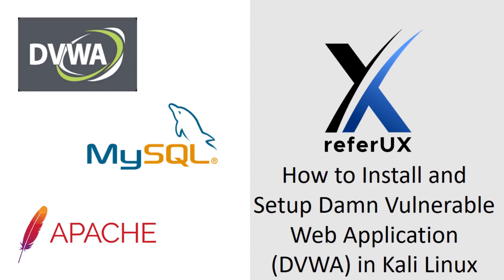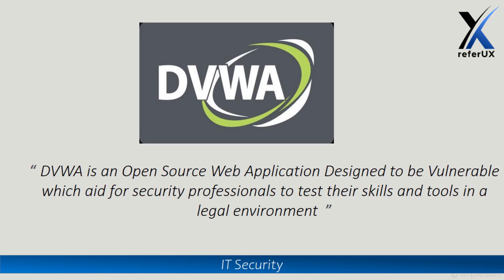Hi guys, welcome to Refer UX. I'm Nimesh. Today let's see how to install and set up Damn Vulnerable Web Application, aka DVWA, in a Kali Linux environment. DVWA is an open source web application designed to be vulnerable, which aids security professionals to test their skills and tools in a legal environment. It is a PHP-based web application.